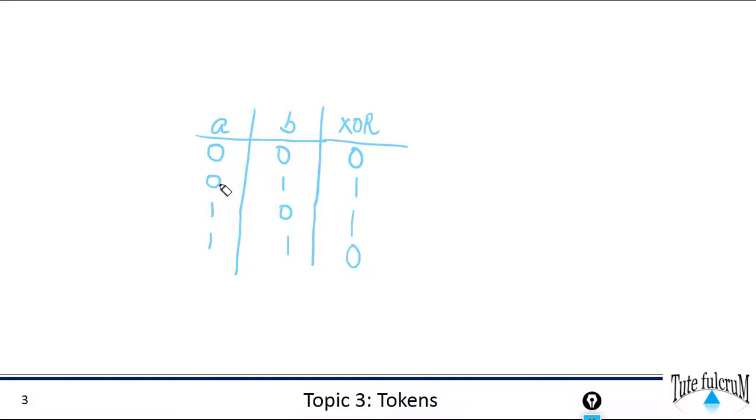If they are different, that is 0 and 1, your output will be 1. Same way 1 and 0, A and B are different, so your output is 1. And then A and B is 1. So when they are alike, the output is 0.